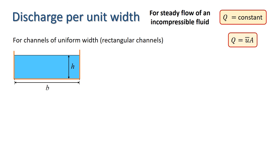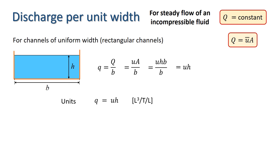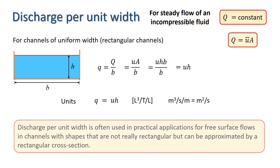For channels that have a uniform width, we often use discharge per unit width, which is simply defined as discharge divided by the channel width, and is usually denoted by a lower case q. The units of little q are length cubed divided by time and length, giving us meters cubed per second per meter, or meters squared per second. It's worth noting that in practice we often use discharge per unit width even for channels which are not truly rectangular.